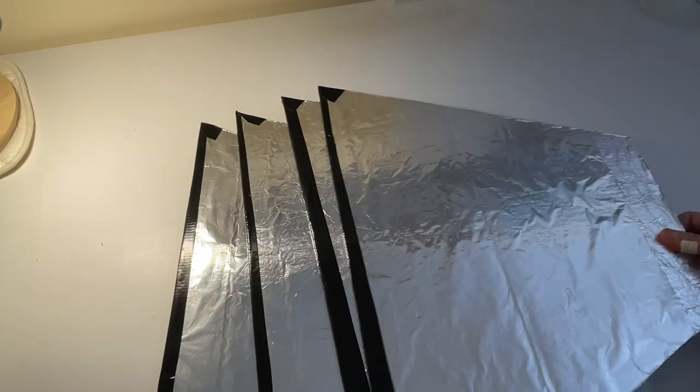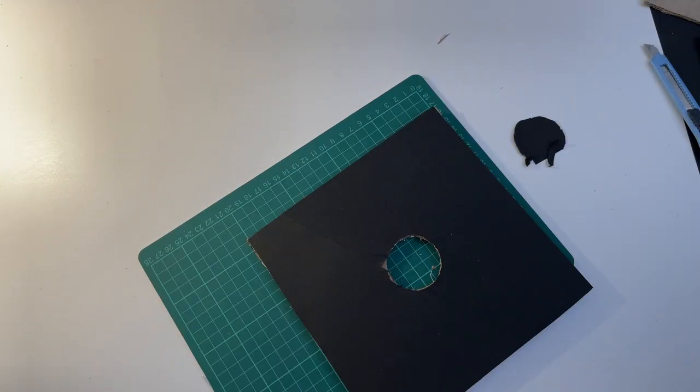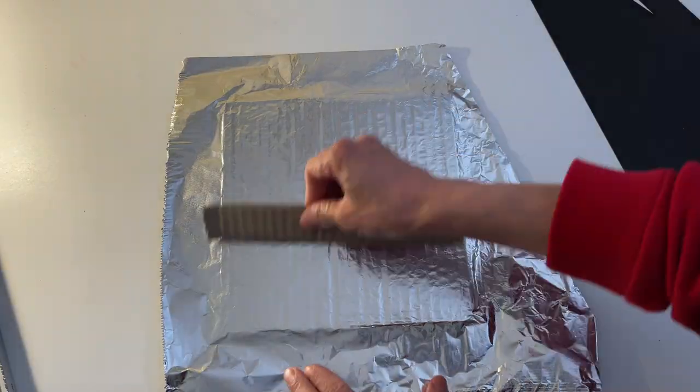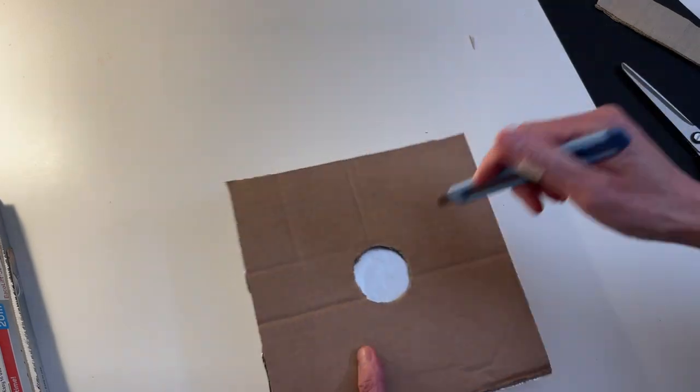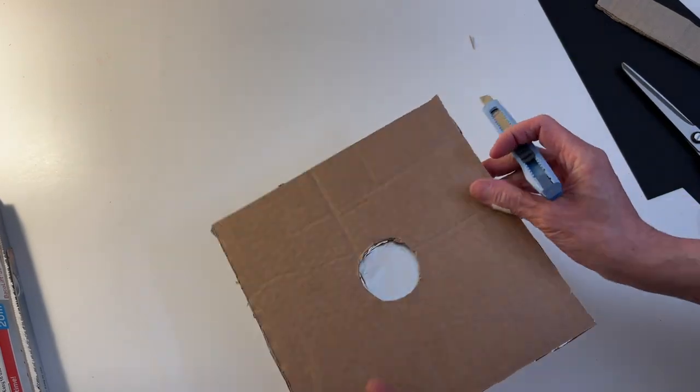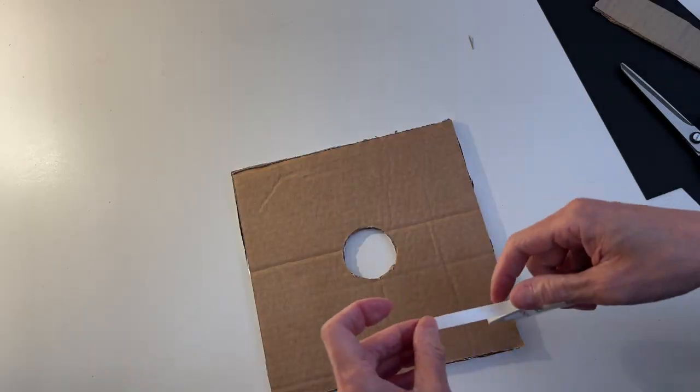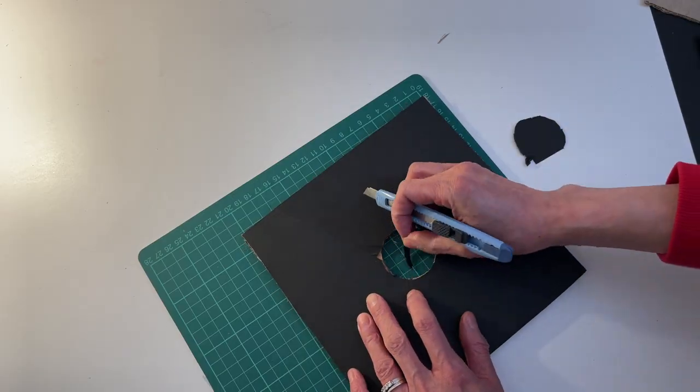Then you will end up having four panels like this. Now for the base, the process is pretty much the same as wrapping and covering the panels. Apply some glue onto the cardboard and stick the foil on, shiny side facing up. Cut out the excess and trace along the circle in the middle using a craft knife. One side is done. Now for the other, stick the double-sided tape for the black paper. Cut out the excess and the circle as well.